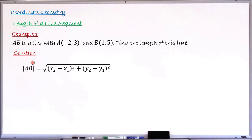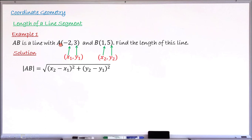The formula says: AB = √[(x₂ − x₁)² + (y₂ − y₁)²], where (x₁, y₁) is the coordinate of one endpoint and (x₂, y₂) is the coordinate of the other. I take the coordinate of A to be (x₁, y₁) and the coordinate of B to be (x₂, y₂). So x₁ = −2, y₁ = 3, x₂ = 1, and y₂ = 5.